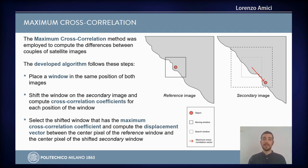At the end, the shift that has the maximum cross-correlation coefficient is selected, and at this point we can compute a displacement vector between the window on the reference image and the shifted window on the secondary image.